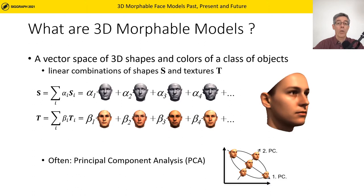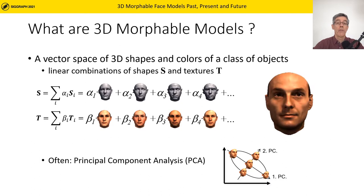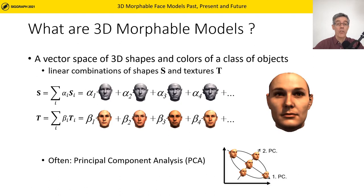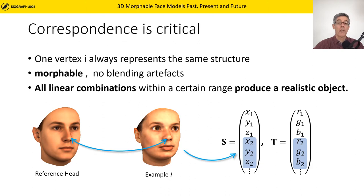Morphable models are a vector space representation of a class of objects. Each individual face is represented by a shape vector S and a texture vector T. In the original model, shape vectors were formed by the 3D coordinates of vertices and texture vectors by their RGB colors. We can form linear combinations to generate new objects, and often a principal component analysis is calculated to find the main axes of variation.